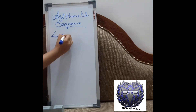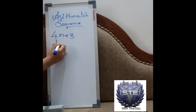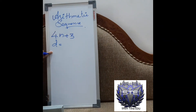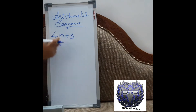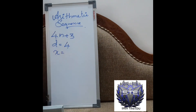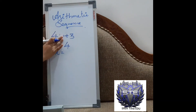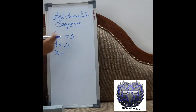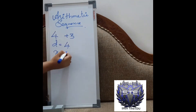Now here is a practice example. xn is equal to 4n plus 3. What is d? D is the number along with n, which is 4. And the first term will be the operation excluding n. So you substitute n=1: 4 plus 3 equals 7. The first term x1 is 7.